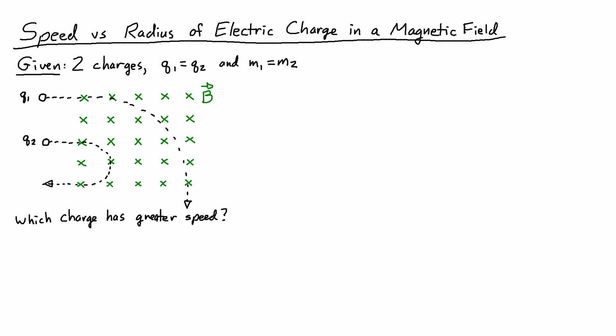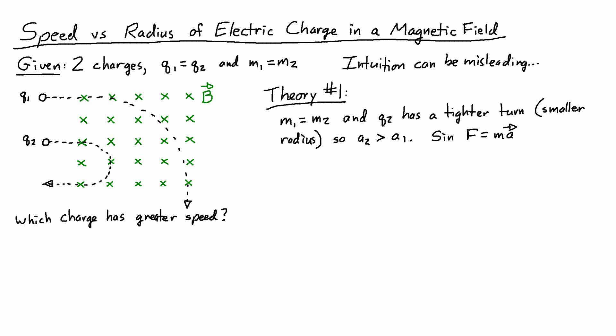So the first time I looked at this, I thought I would use my intuition and understanding of physics, but unfortunately intuition can be misleading. I'll start with one theory. The first theory is that they have the same mass, m1 equals m2, and Q2 has a tighter turn with a smaller radius, and the tighter turn is usually associated with higher acceleration. Then since from Newton's second law we have F equals ma, that means F2 must also be greater than F1.